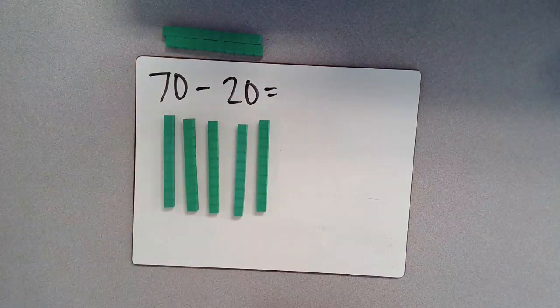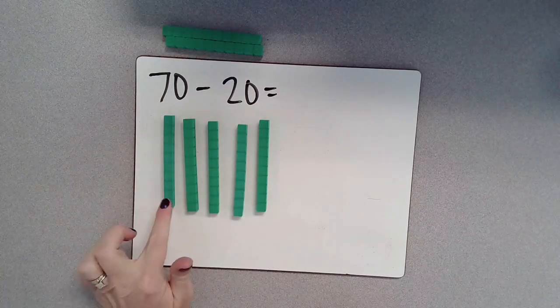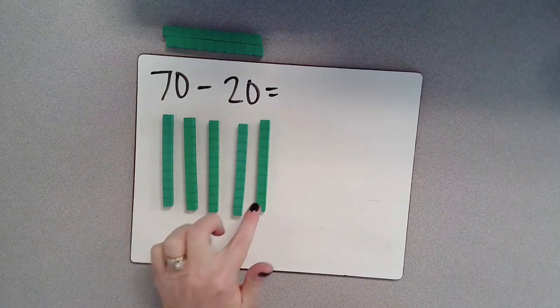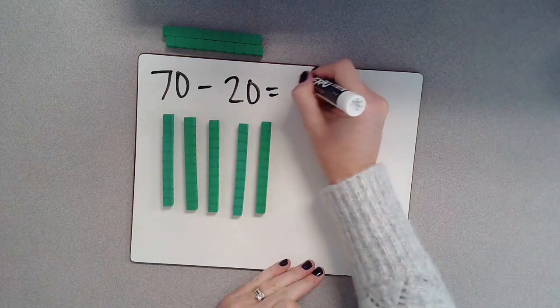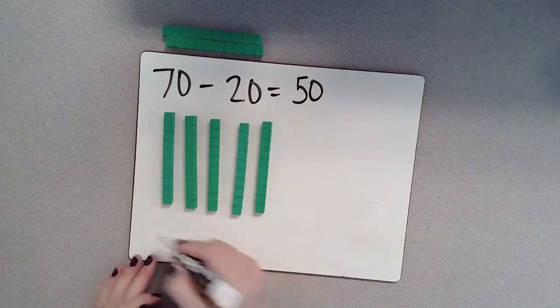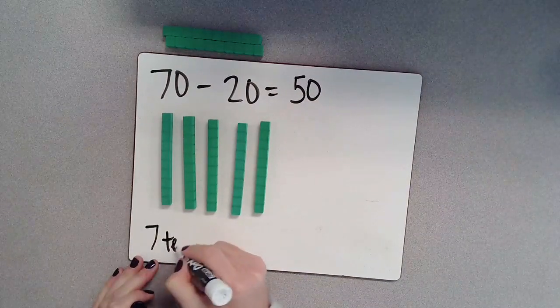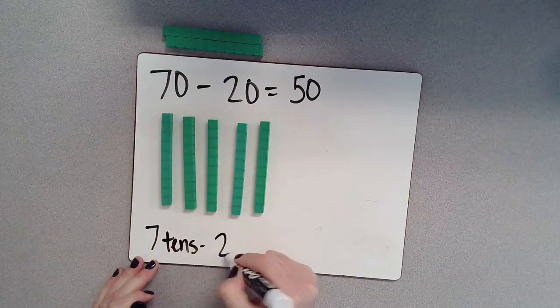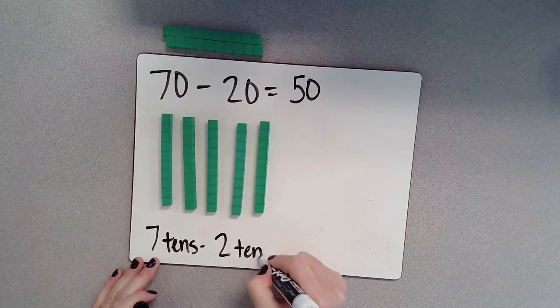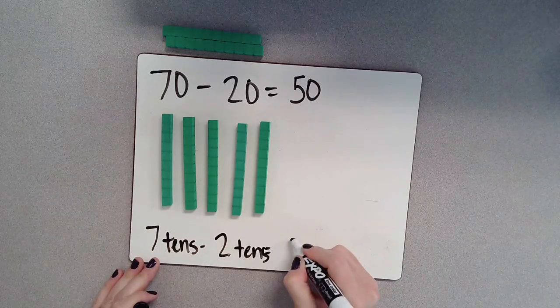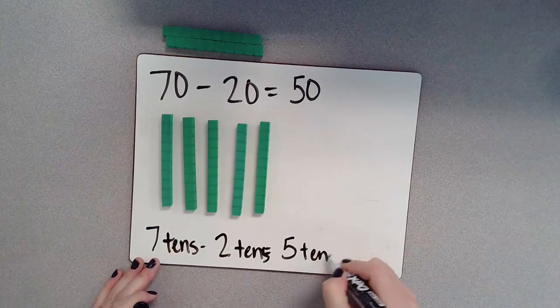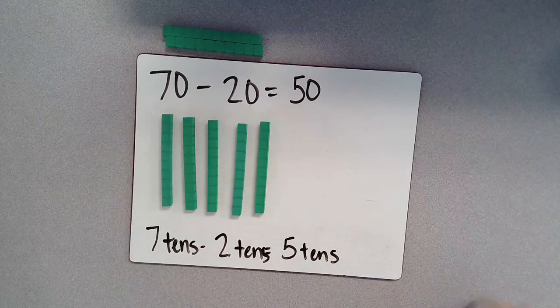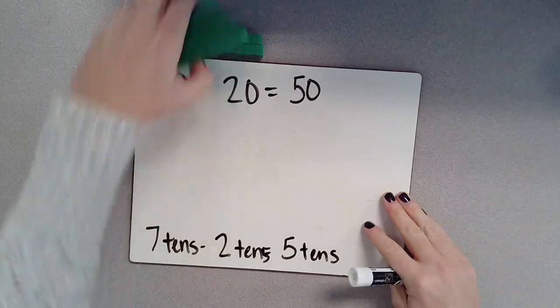All right, so let's see how much we have left over. 10, 20, 30, 40, 50. So I have 50. So I know that 7 10s take away 2 10s is going to give me 5 10s. All right, let's switch gears just a little bit.